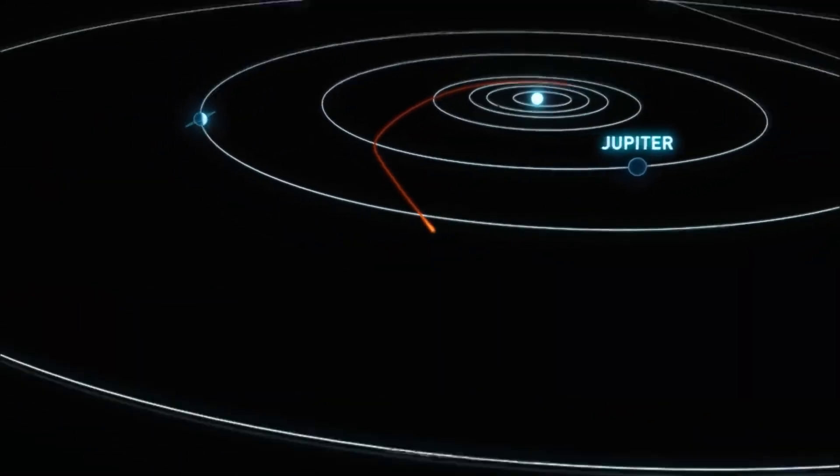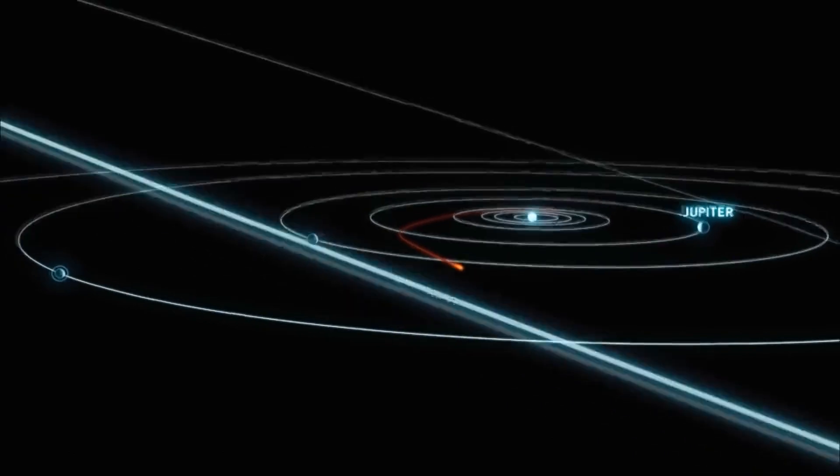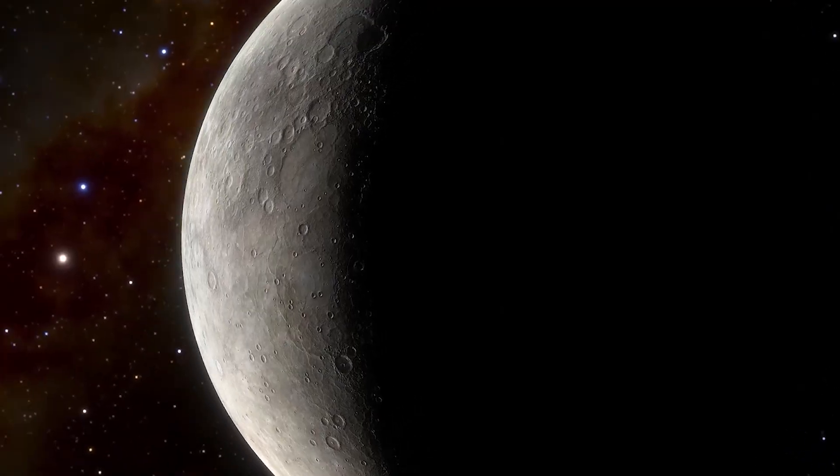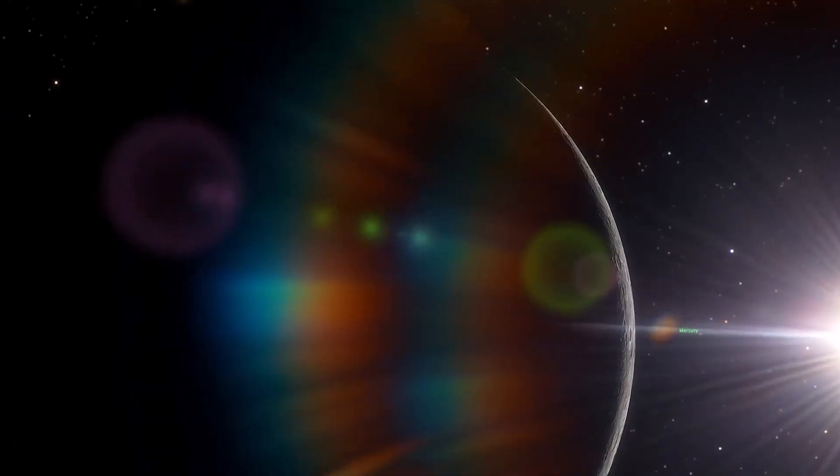This demonstrates that our definition of a planet may need to become more context-dependent in order to take into consideration the myriad of possible outcomes that can result in the formation of a globe. It is possible that planets have some kind of connection to the conditions under which they formed or to specific regions.